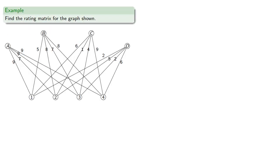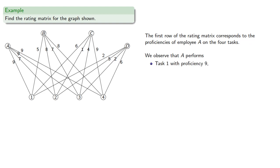For example, let's find the rating matrix for the graph shown. The first row of the rating matrix corresponds to the proficiencies of employee A on the four tasks, and we observe that employee A performs task 1 with proficiency 9.